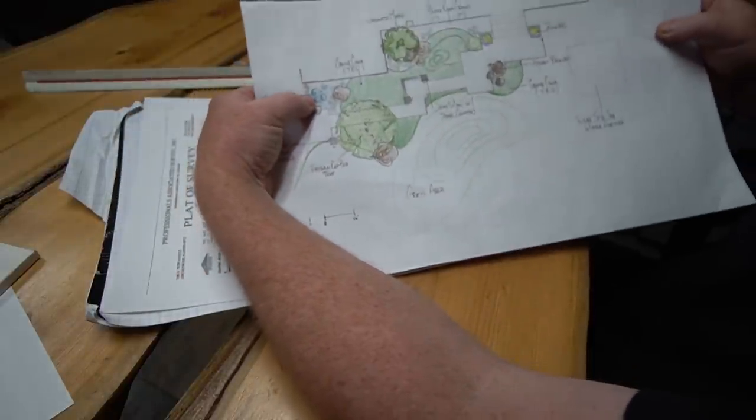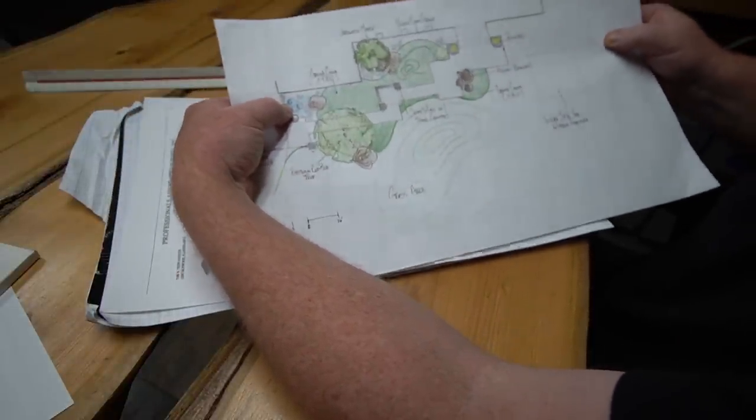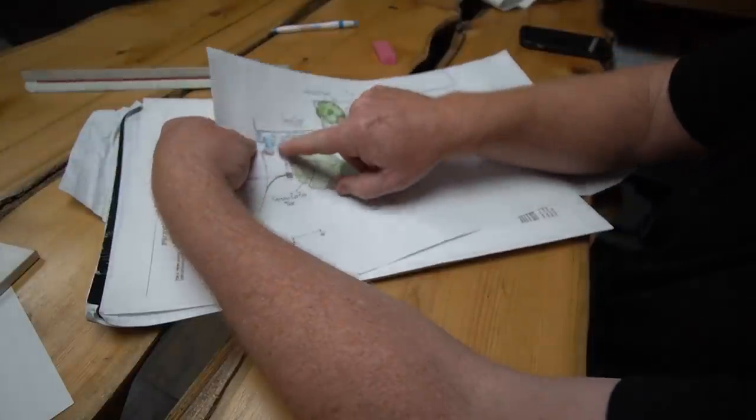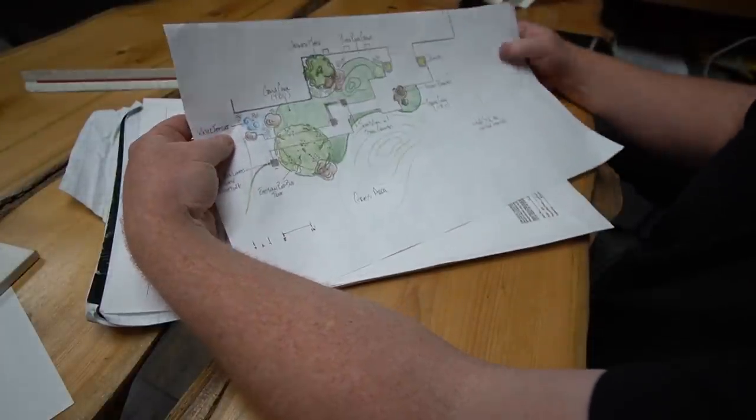Does this actually help you understand what we're building? This is three different urns. The little red spots are lights. It really doesn't help the customer visualize at all what we're doing.